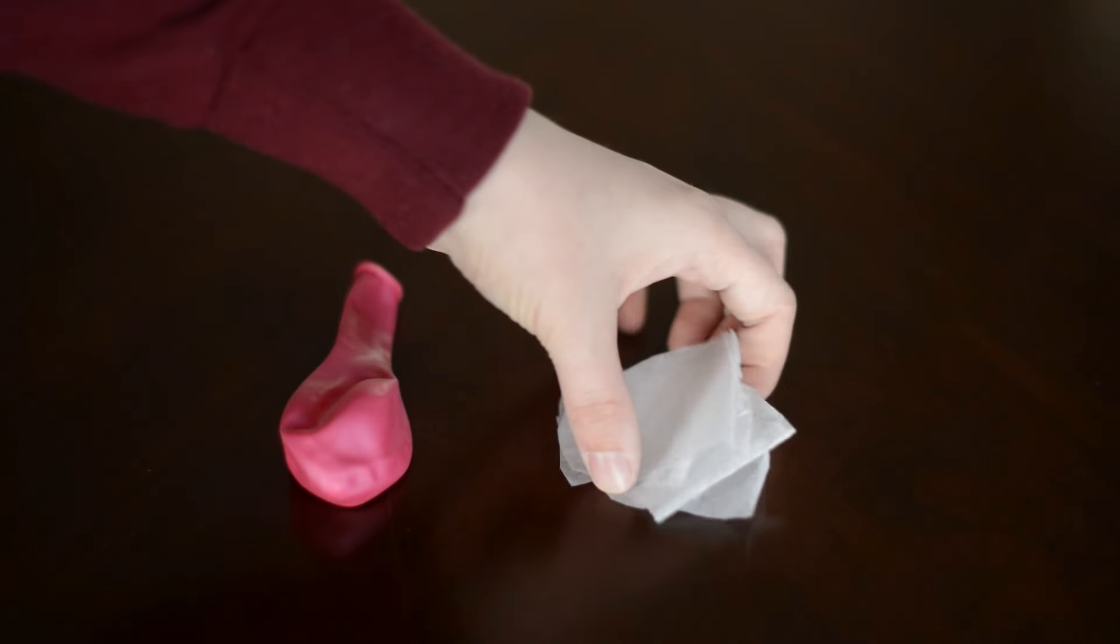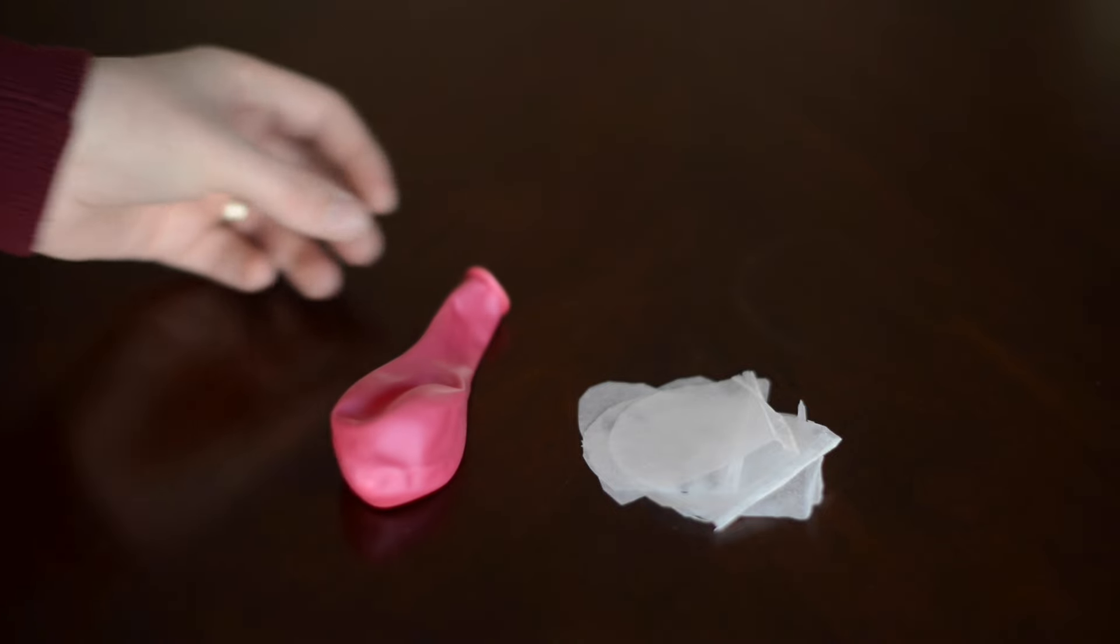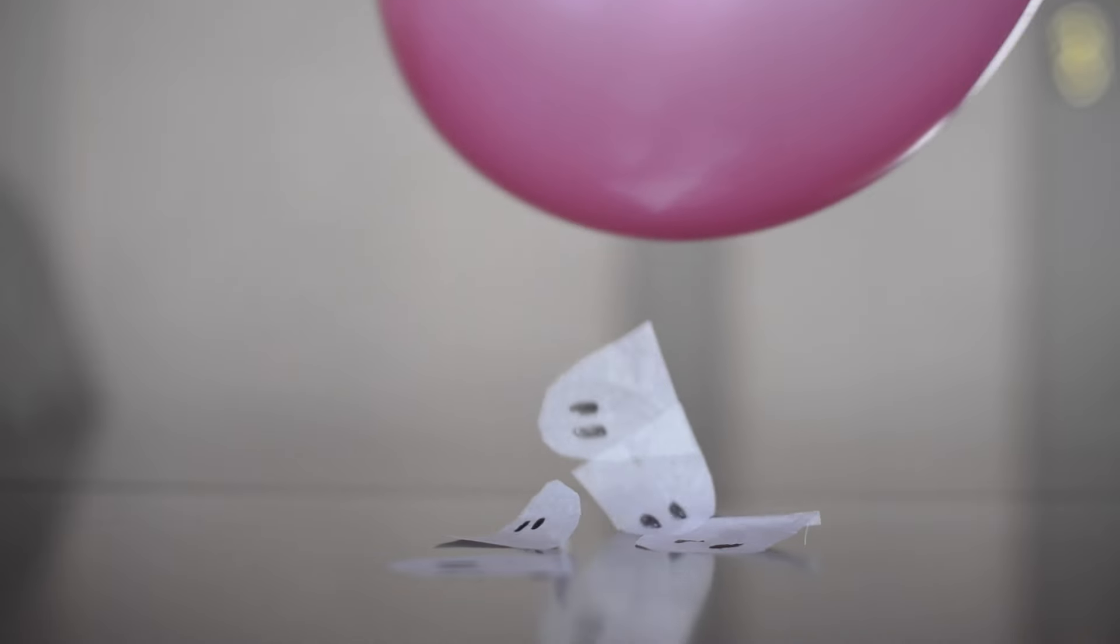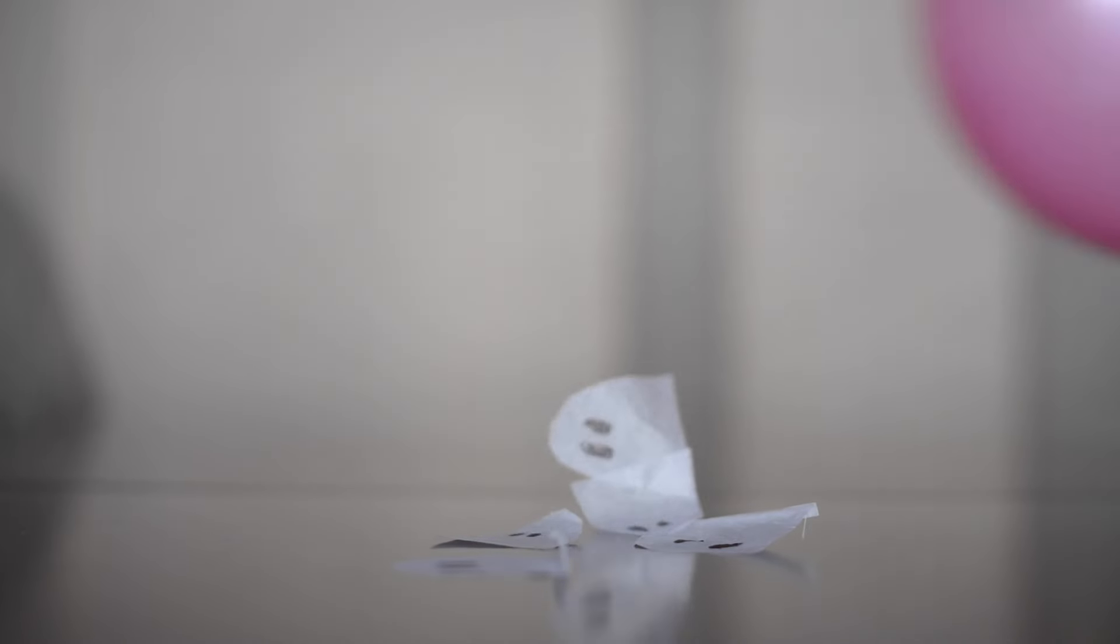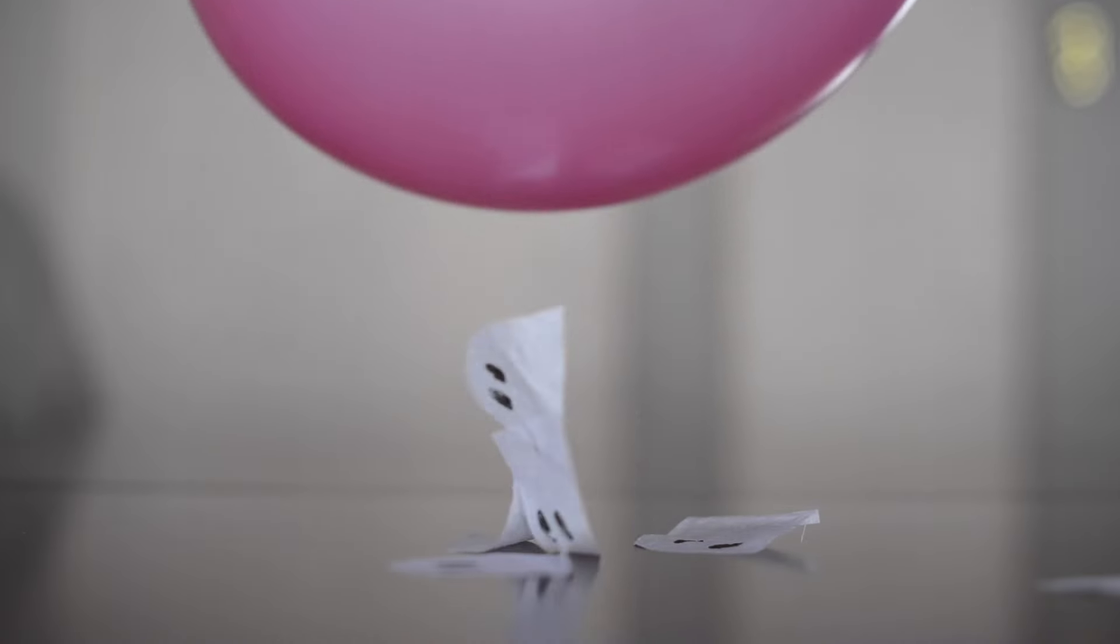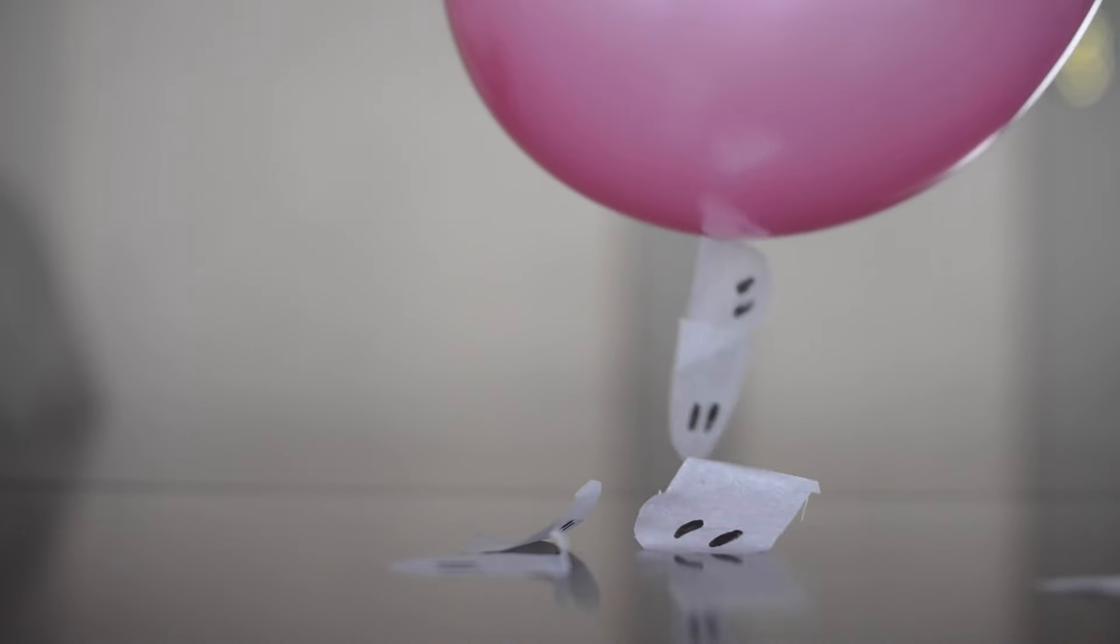What you need for this is some tissue paper cut out in whatever shapes you want and a balloon. We cut ours out into little ghost shapes. What you want to do is rub the balloon on your hair or your shirt and then that will create a static charge and then you can get your ghost to dance.